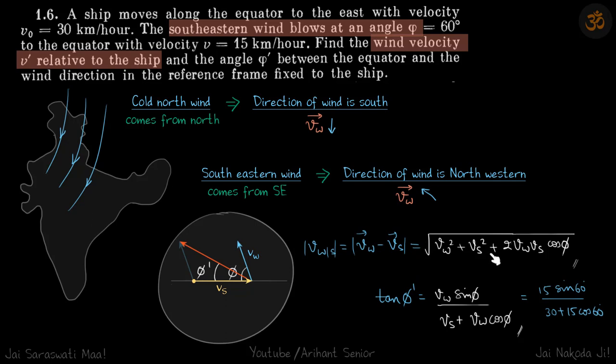In the second part, we need to find the direction the wind makes with respect to ship. This is the direction of the wind with respect to ship, and this is the direction of ship. We're looking for angle phi dash. You can see tan phi dash is this height upon this length. This height is Vw sin phi and this width is Vs plus Vw cos phi.